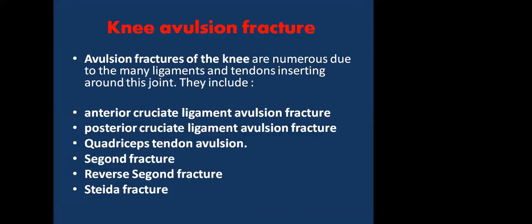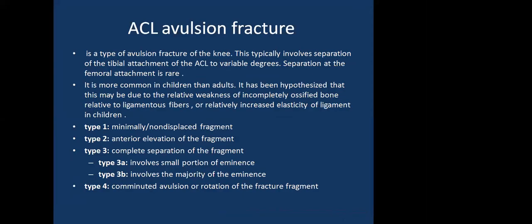Knee avulsion fractures are numerous due to the many ligamentous and tendinous insertions around this joint. These include ACL avulsion fracture, PCL avulsion fracture, quadriceps, Segond fracture, reverse Segond fracture, and Stieda fracture. ACL avulsion fracture typically involves separation of the tibial attachment of the ACL. Separation of the femoral attachment is rare. It is more common in children than adults, possibly due to relative weakness of incompletely ossified bone or increased ligamentous elasticity in children.